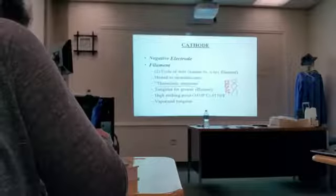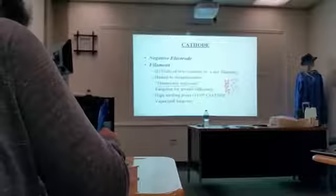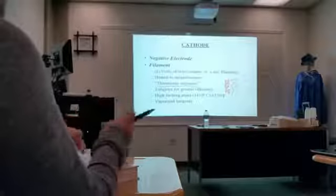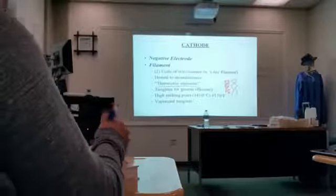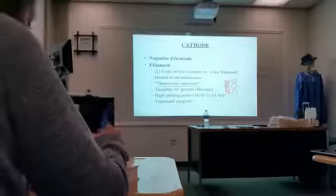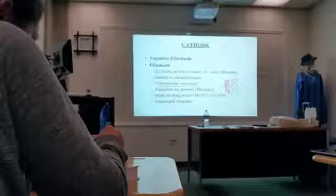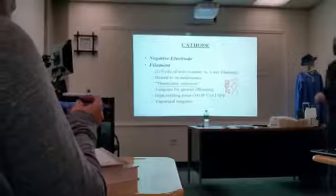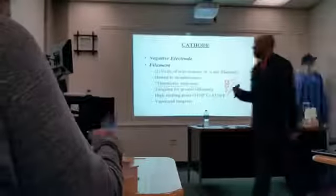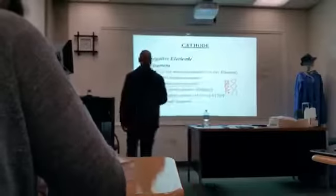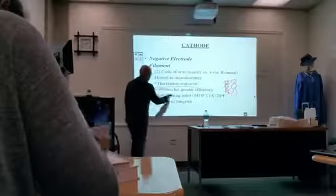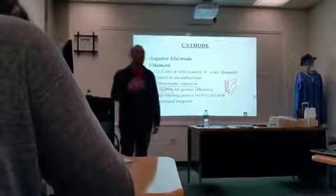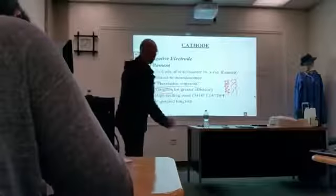The greater the MA, the more electrons are boiled off. The less the MA, the fewer electrons are boiled off — this process is still called thermionic emission. The metal of choice for the coiled wires is tungsten, because it has a high melting point and a high atomic number.